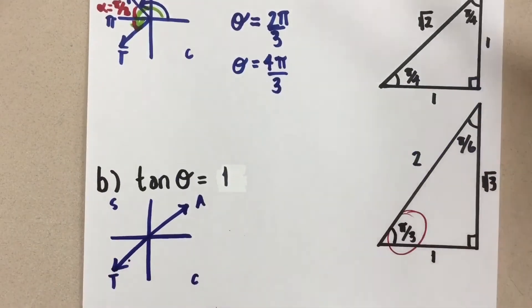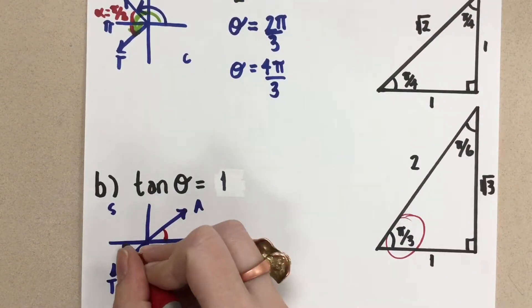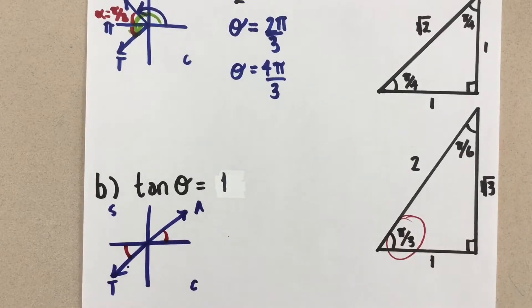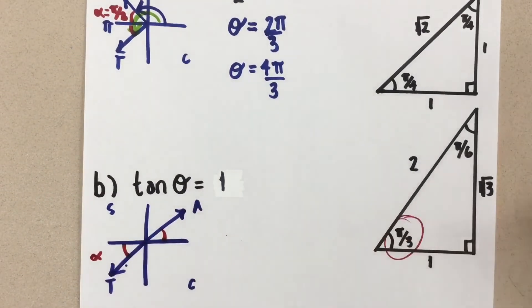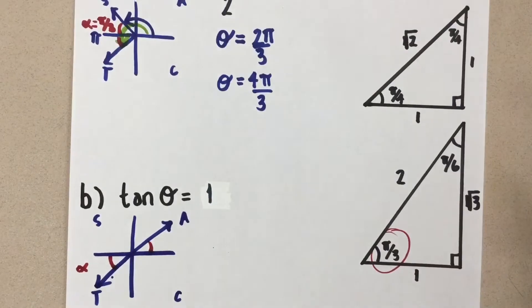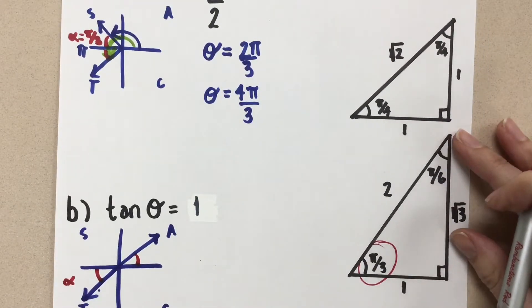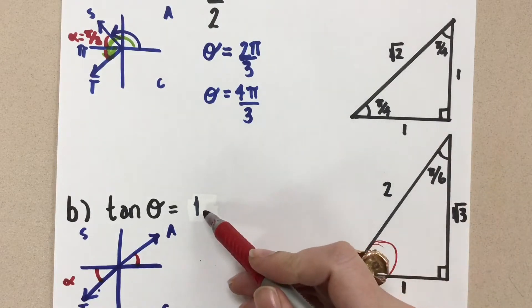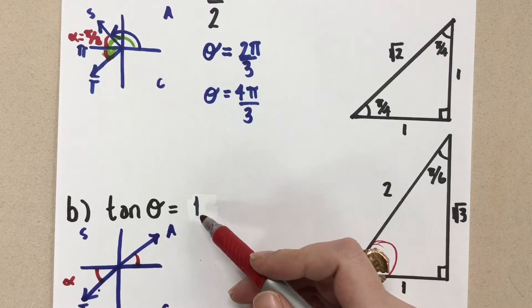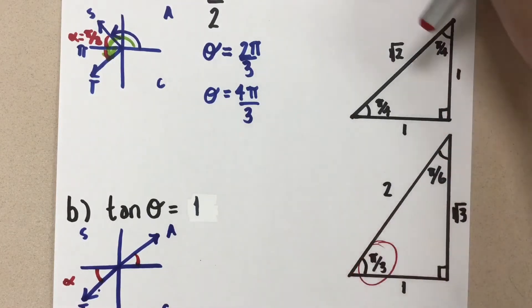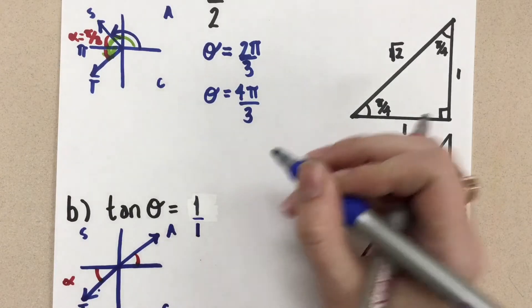So next, as always, we want to look at that related acute angle here and here. Okay, so we'll call that alpha again. And we're going to go over to our special triangles and find when tangent of an angle is equal to one. Now, this is not a fraction, so to turn it into a fraction, what we're really looking for is one over one, if that helps us to see the fraction there, one over one.